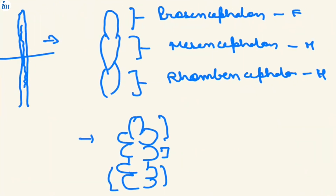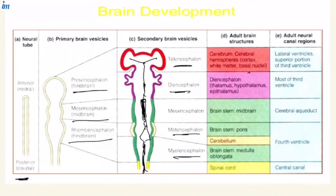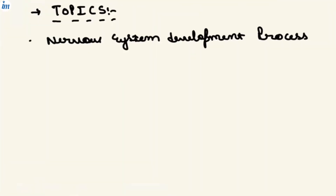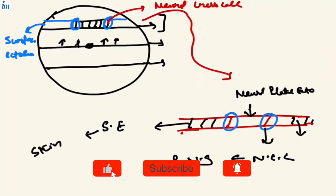The neural tube differentiates into primary vesicles, which further differentiate into five secondary vesicles whose adult derivative structures must be learned. Simultaneously, the ventricles form: lateral ventricles in the telencephalon, third ventricle in the diencephalon, cerebral aqueduct in the mesencephalon, and the fourth ventricle and central canal in the metencephalon and rhombencephalon. For CSF pathway and production details, see the CSF video on the Inspiring Minds YouTube channel.